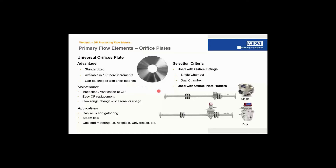Universal orifice plates are used with single and dual chamber orifice fittings. These fittings are designed to install the orifice plate concentrically in the flow stream with very tight tolerances. They have the advantage that if you need to inspect or maintain an orifice plate, it's easy to pull out, inspect, and put back in. If you have seasonal flow changes — like in hospitals or universities where gas usage is larger in winter than summer — you can easily remove and replace the plate with a different beta ratio, larger or smaller bore.